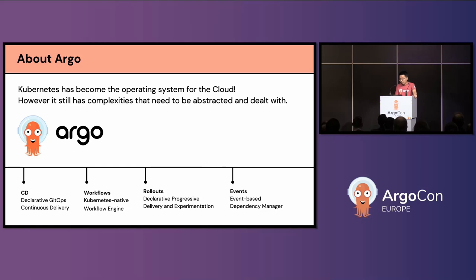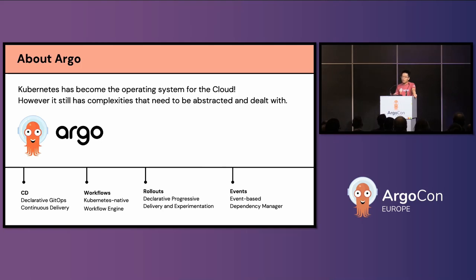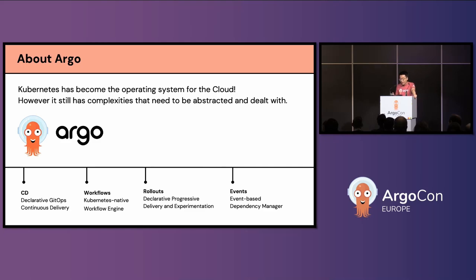Argo Workflow is the Kubernetes-native workflow engine. If you already know Kubernetes, it's basically the advanced version of the Kubernetes Job, but it does way more than just jobs. Argo Rollouts does progressive delivery, including blue-green and canary patterns, and can also do experimentation — it's an advanced version of the Kubernetes deployment controller. Argo Events is the last but not least — it's an event-based dependency manager that helps you glue external events with Kubernetes events, triggering the next necessary action in a Kubernetes-native way.